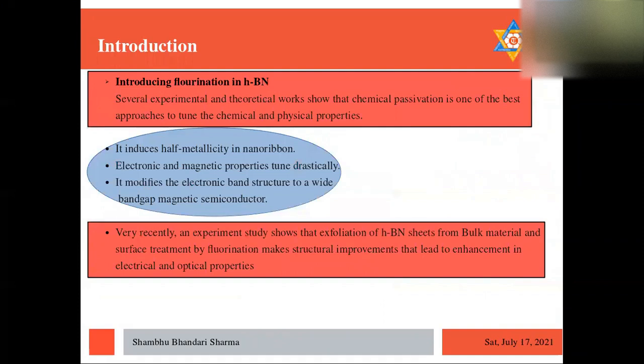So keeping that in mind, we introduce the fluorine passivation or fluorination in h-BN structure. It is because several literature shows that fluorination induces half-metallicity in nanoribbon, it changes the electronic behavior from insulator to semiconductor, and it even induces magnetism.